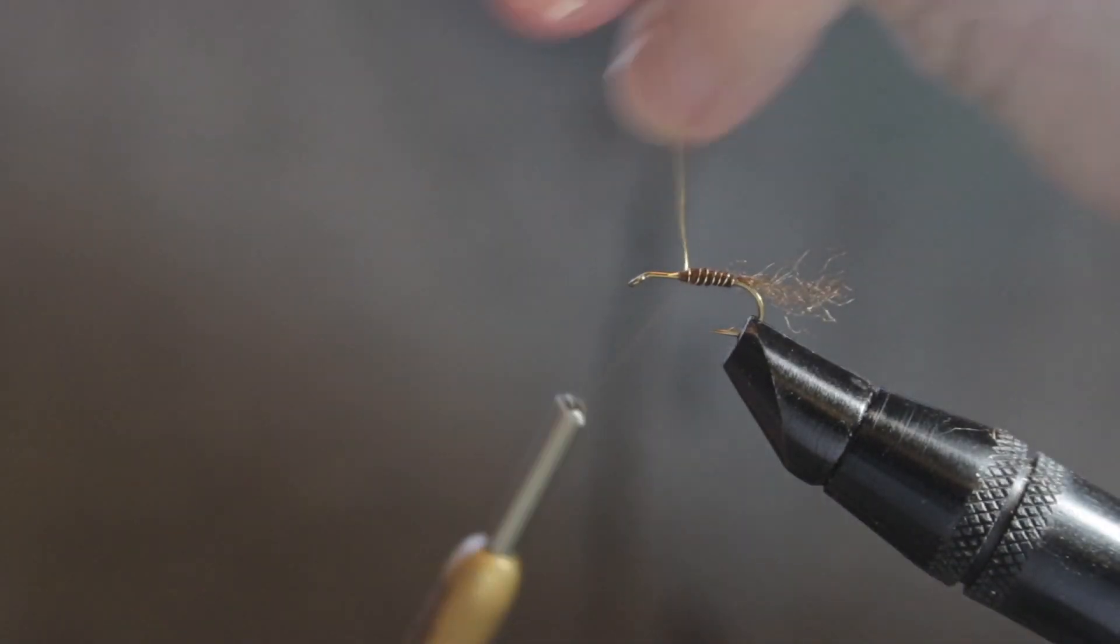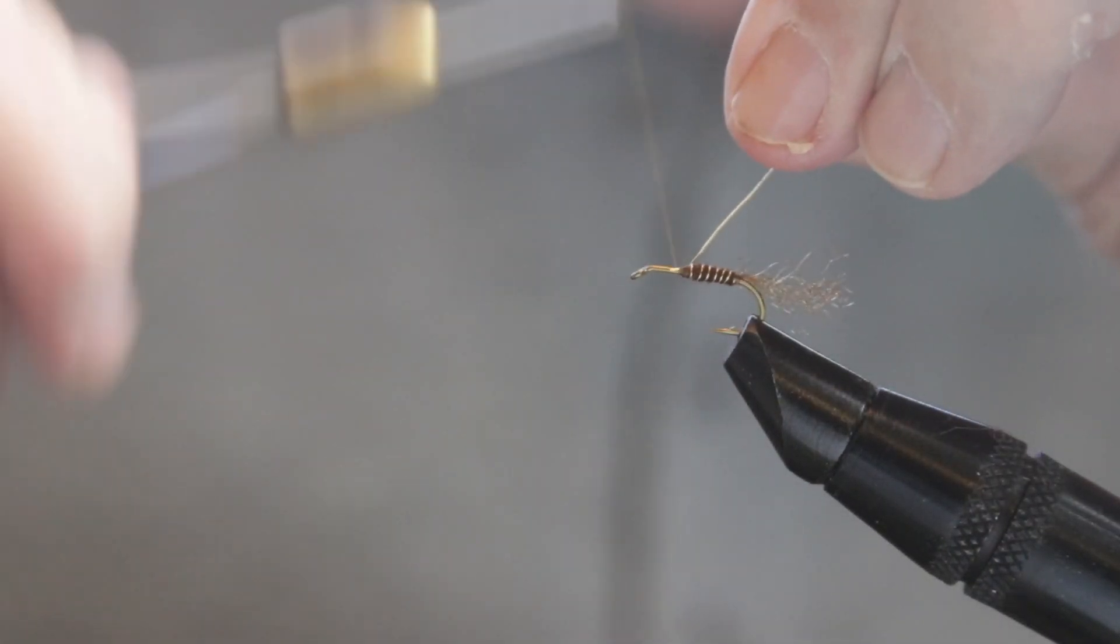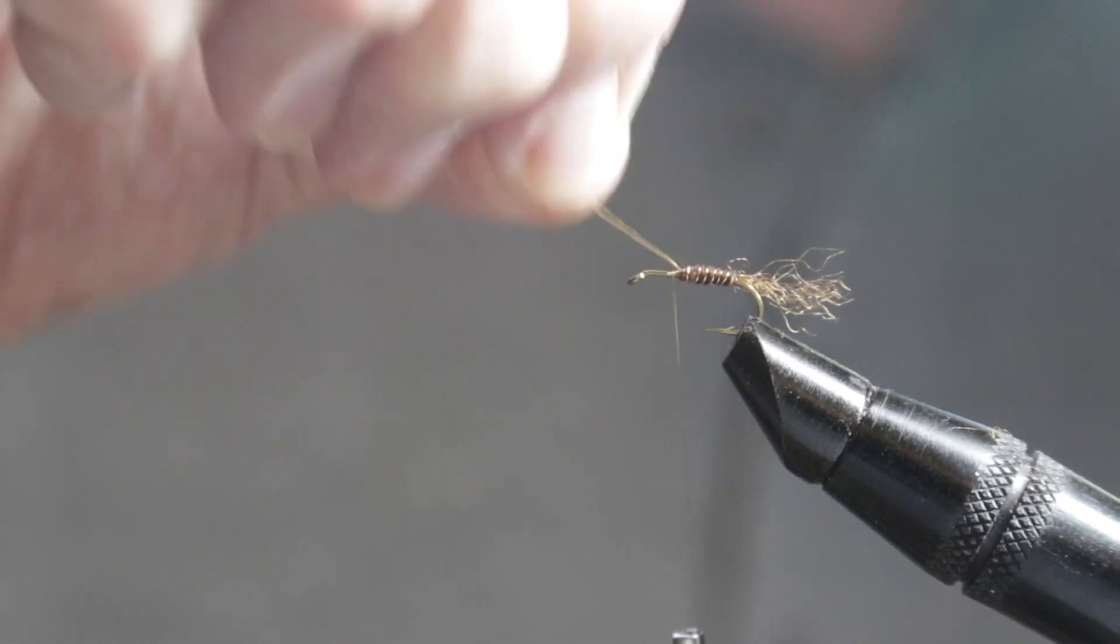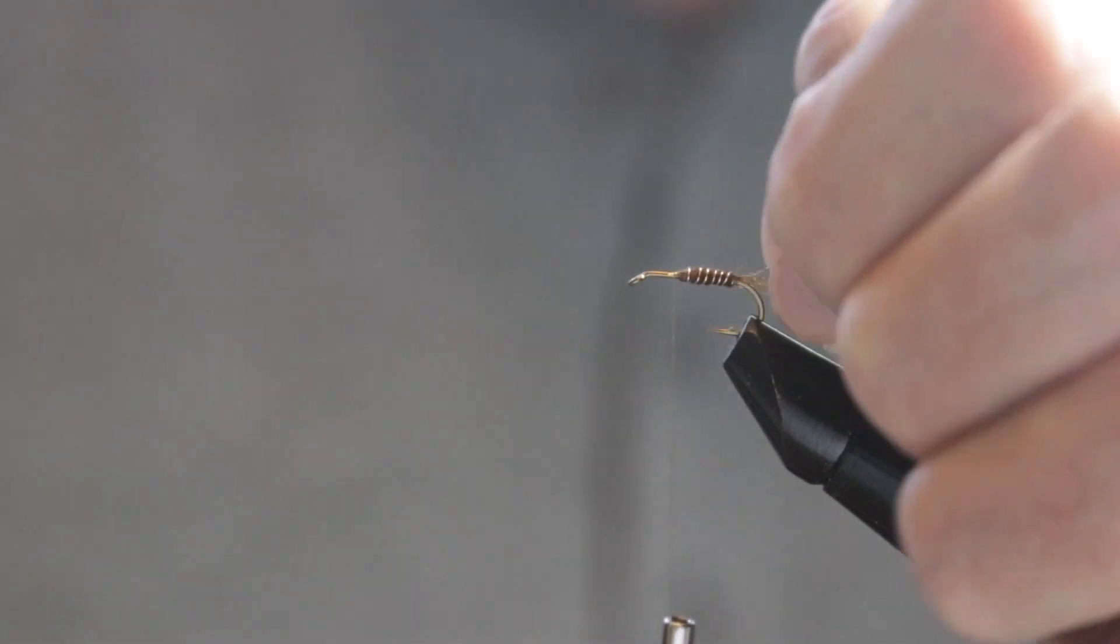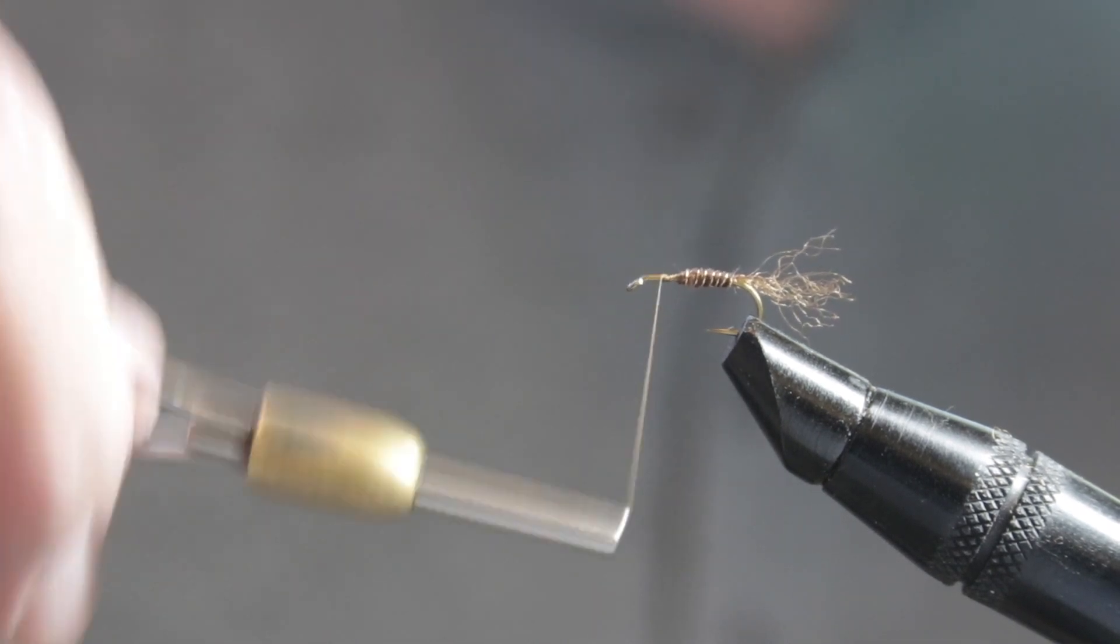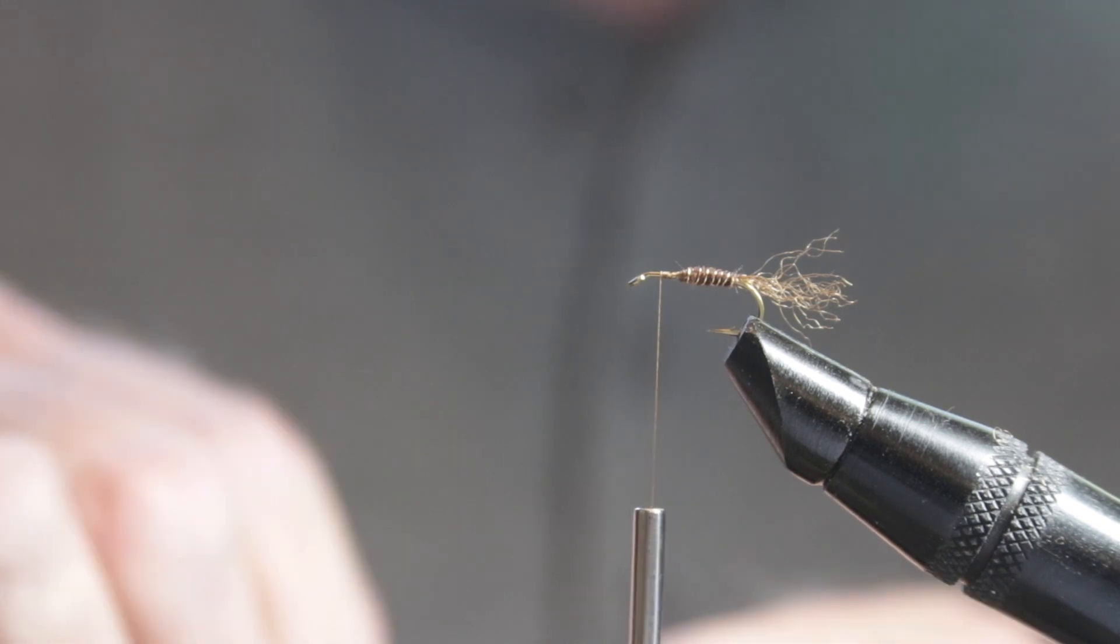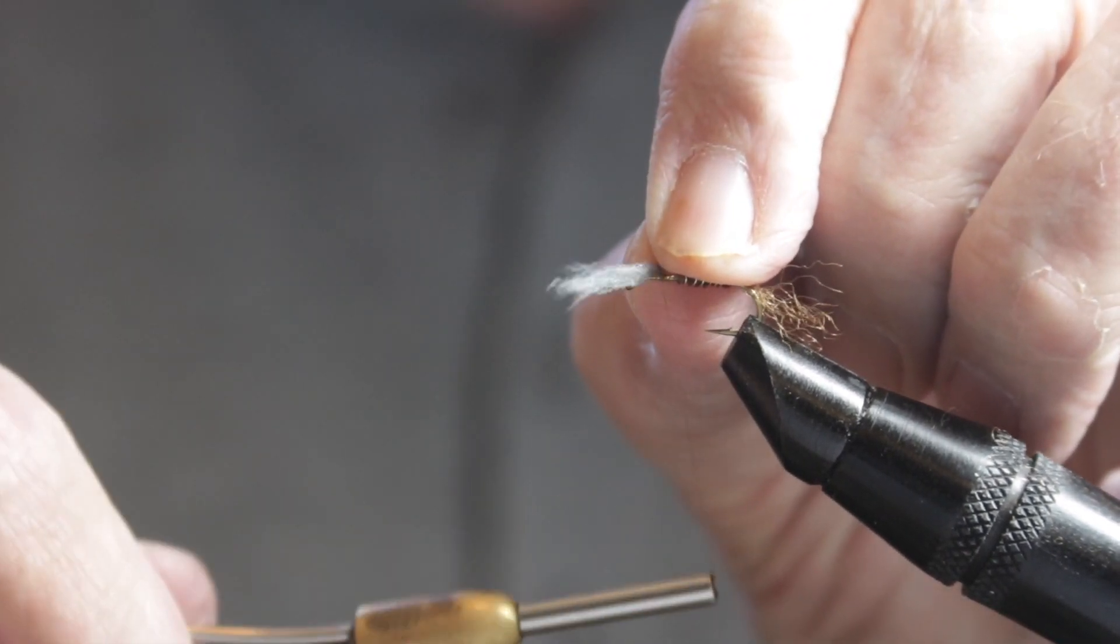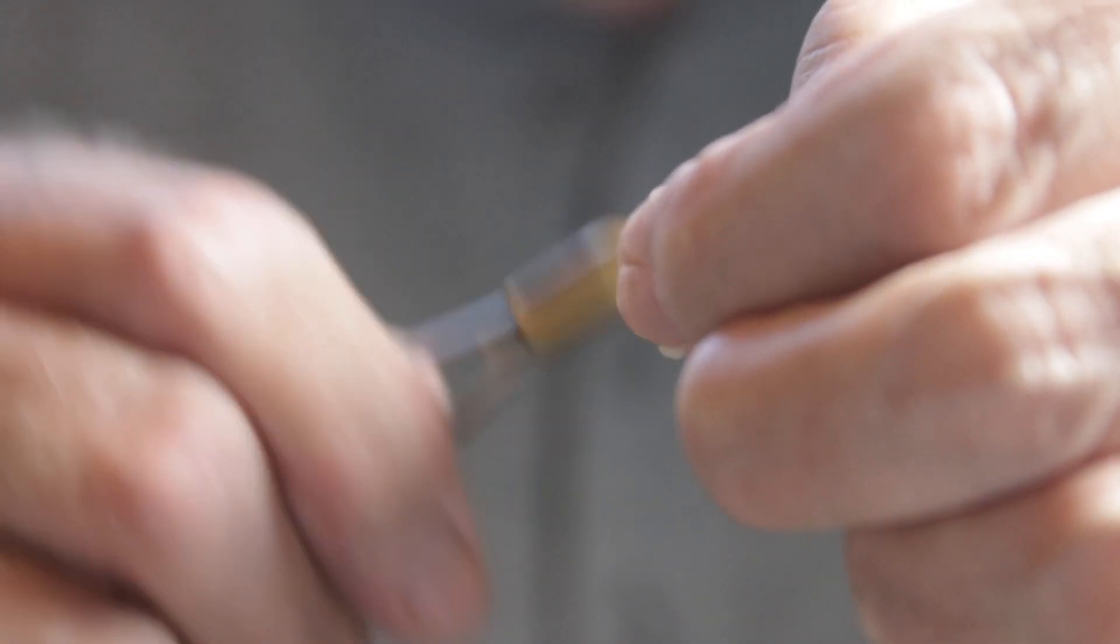We'll be in preparation for the next material, which is going to be our wing. We're going to work the thread back toward the eye of the hook, about halfway between where we've tied off the wire and the eye. And we'll get ready for our material for the wing. Now I'm using dark poly yarn here, rather than a light color that you'd see in a regular spinner. You could use anything you want. You could use Zeelon, Antron, any of those things. We'll secure that with a couple of turns and some figure eight wraps.